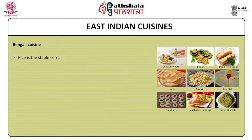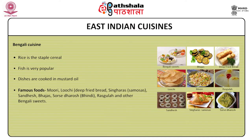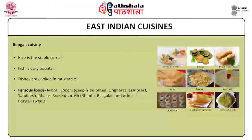Bengali cuisine: rice is a staple cereal. Fish is very popular and the dishes are prepared with mustard oil. Poppy seeds are used in some preparations, giving a distinct flavour and taste. Mishti doi, i.e. sweetened yoghurt, is very popular in Bengali cuisine. Other popular dishes are muri, luchi i.e. deep fried bread, singaras or samosas, sandesh and other Bengali sweets.